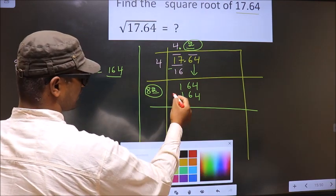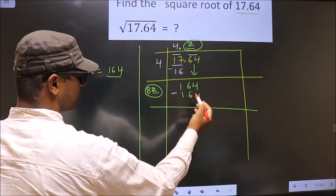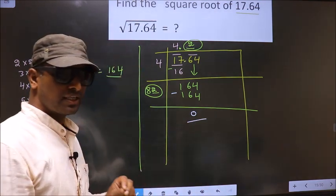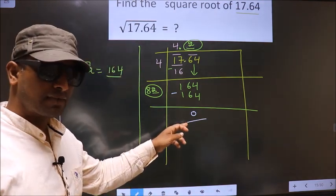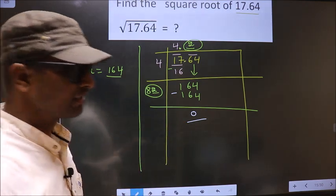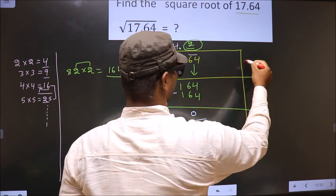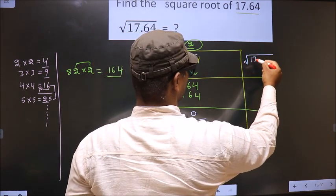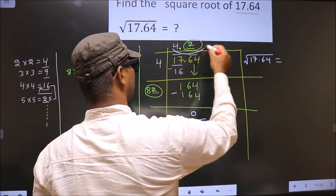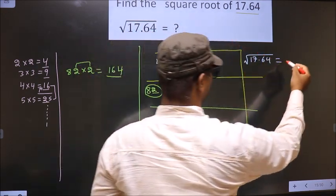Now you subtract. 164 minus 164 is 0. We got 0 here. That means given number is a perfect square. And the square root of 17.64 is this number. That is 4.2.